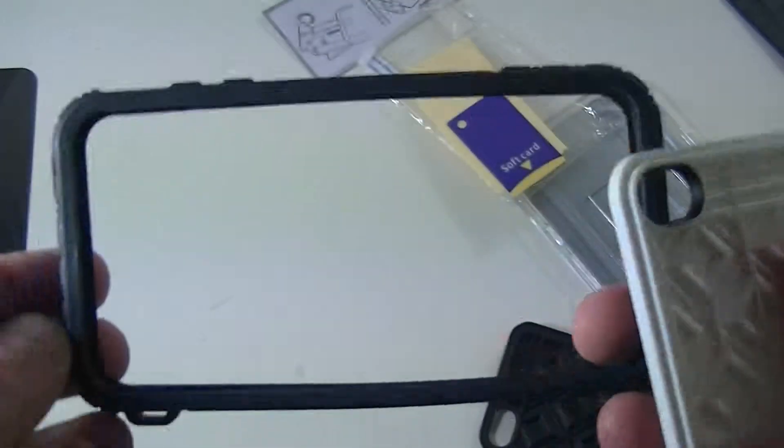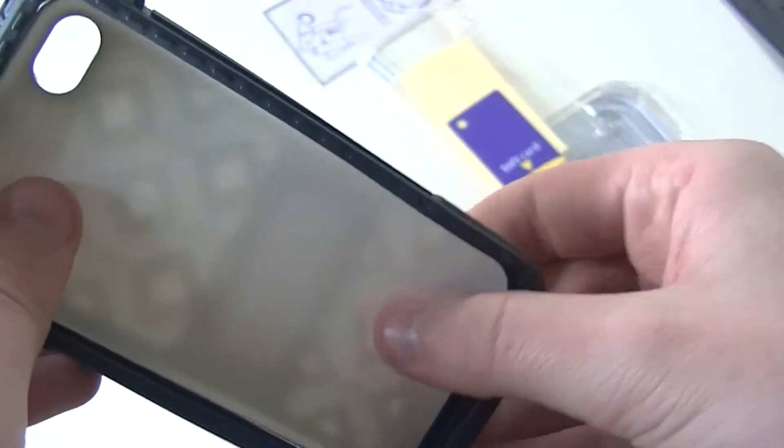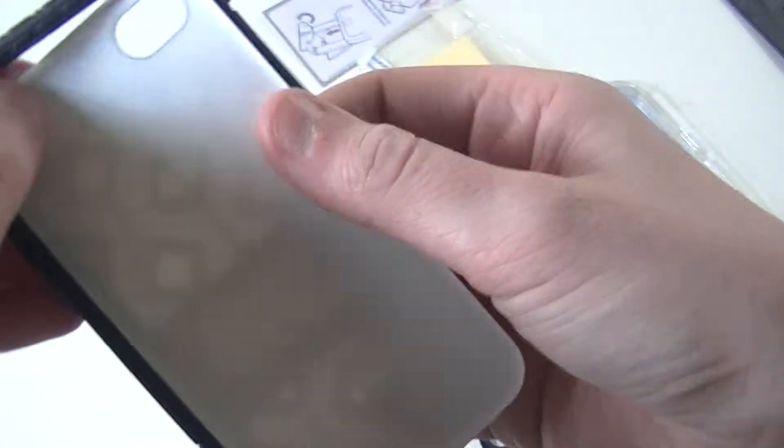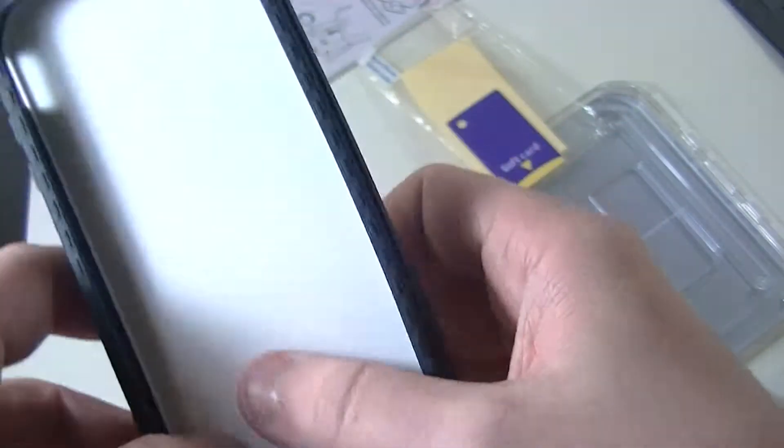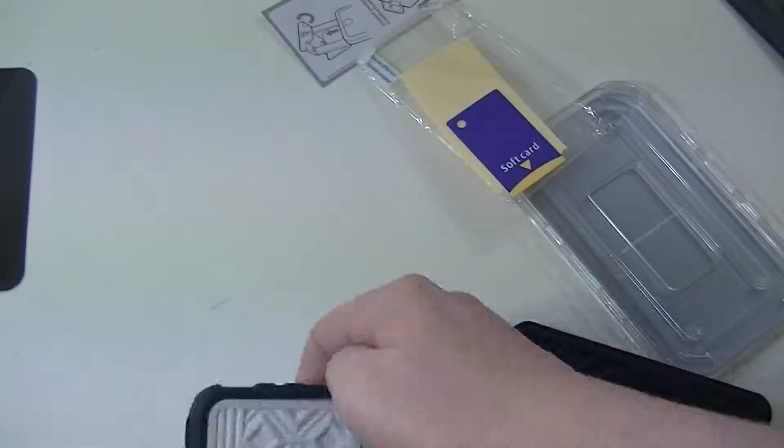Here is your little case right here that this is going to slip into. You just press it down in there and it will stay. Once you get it on your iPhone, it will tighten this case up so the back plate is not going to fall out.